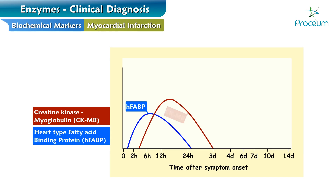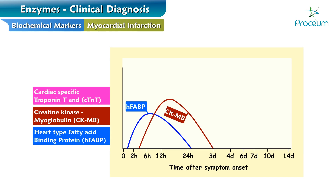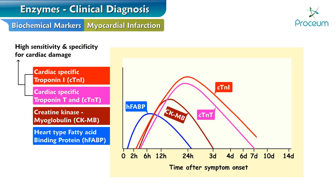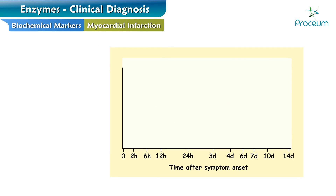CKMB returns to baseline after 2-3 days. The third indicator is cardiac-specific troponin T, cTnT, and cardiac-specific troponin I, or cTnI. These are cardiac proteins, highly sensitive and specific for cardiac damage. They appear in plasma 3-5 hours following chest pain, reach peak activity at 12-24 hours, and take about 7-10 days to return to normal levels. There are also other biochemical markers of historical importance.